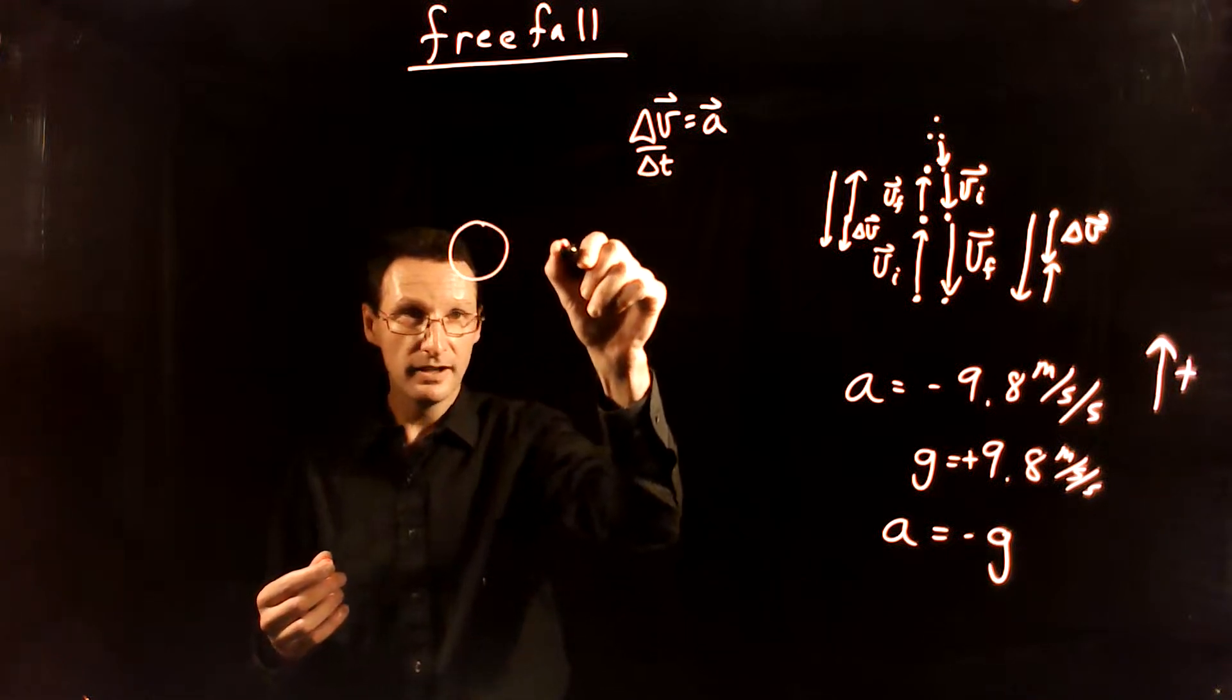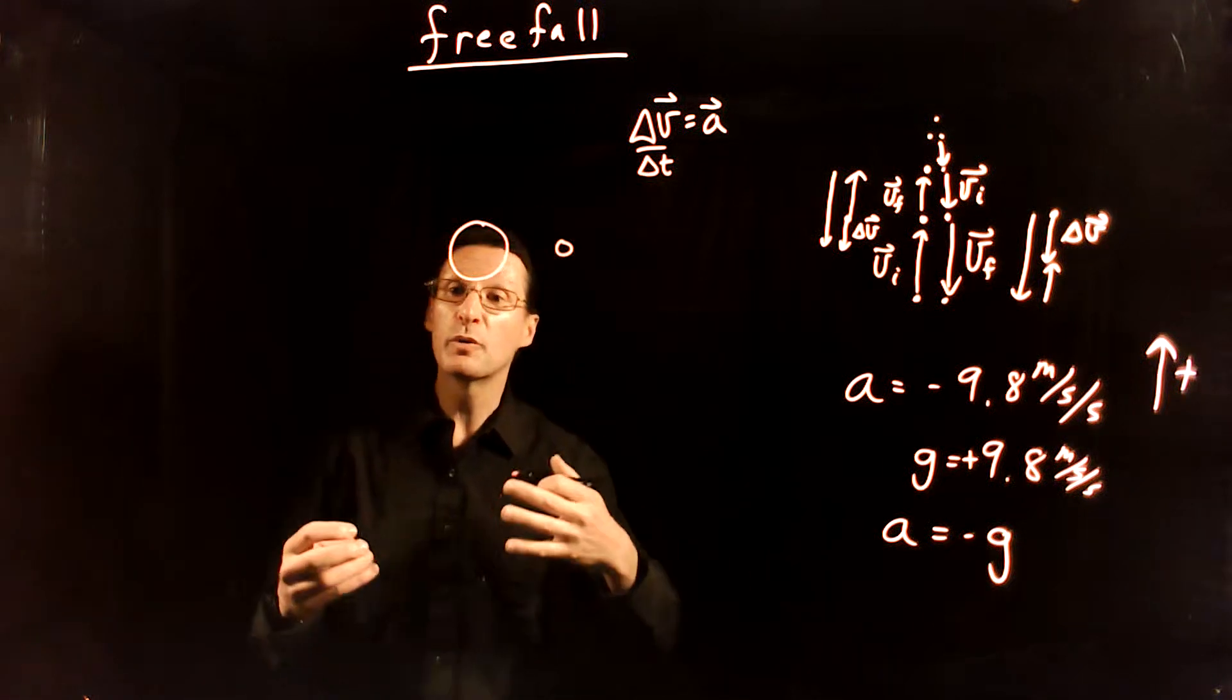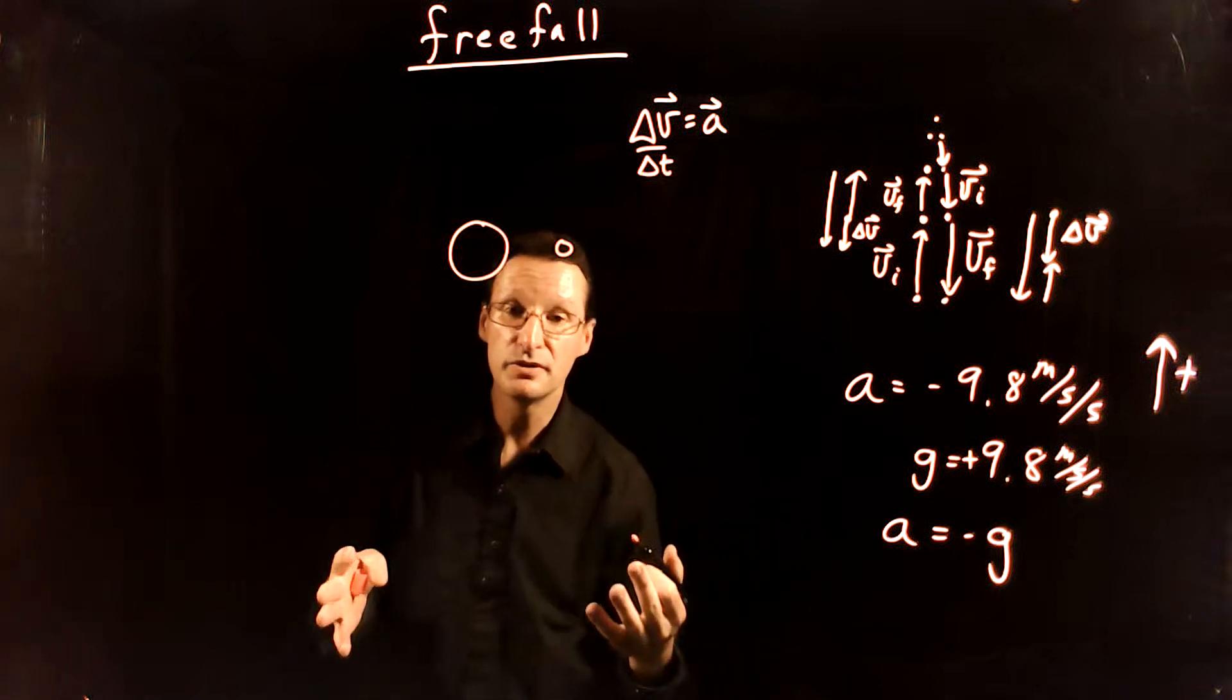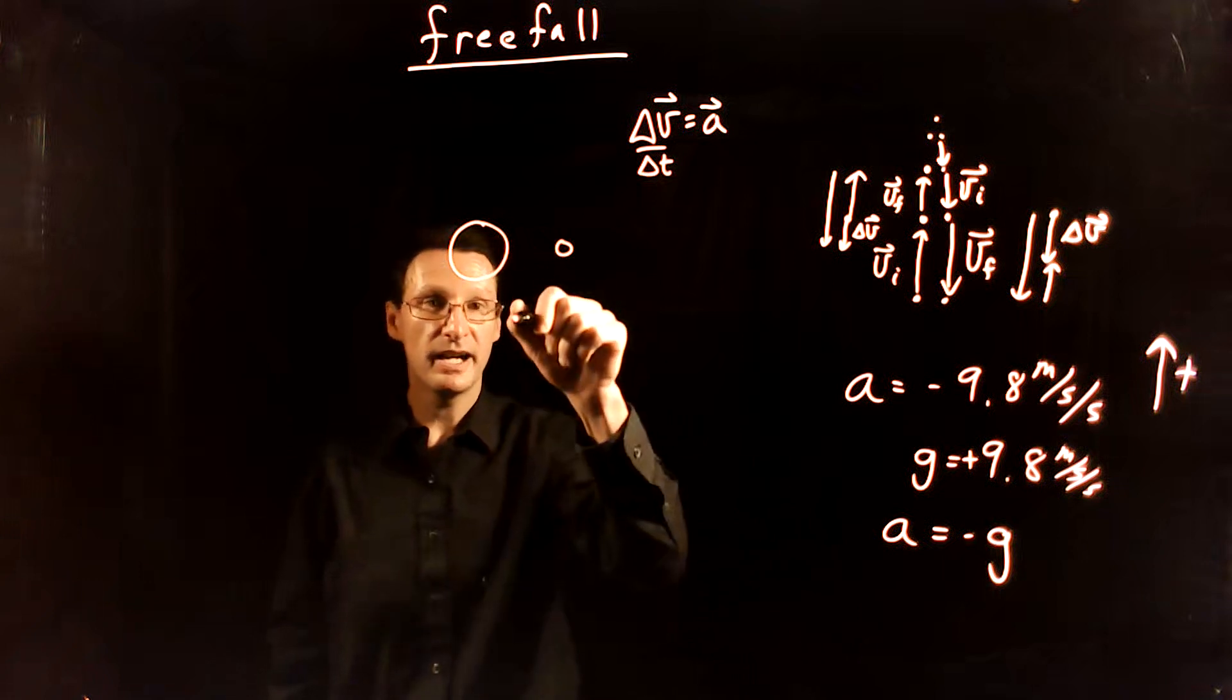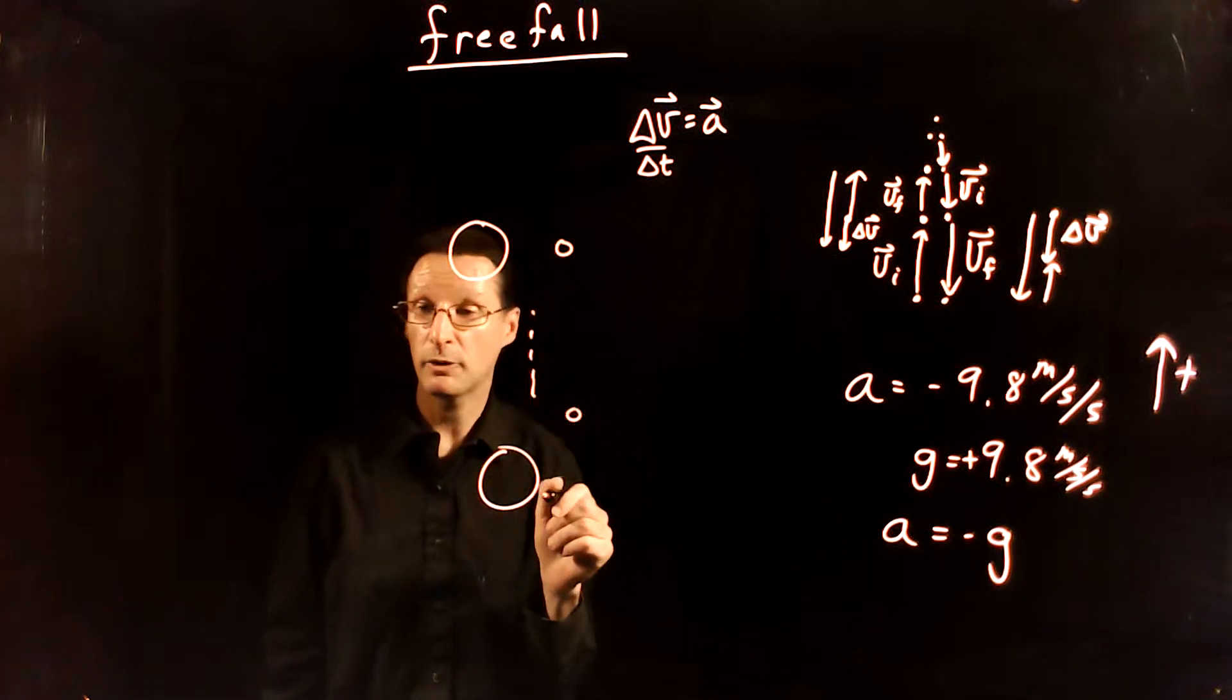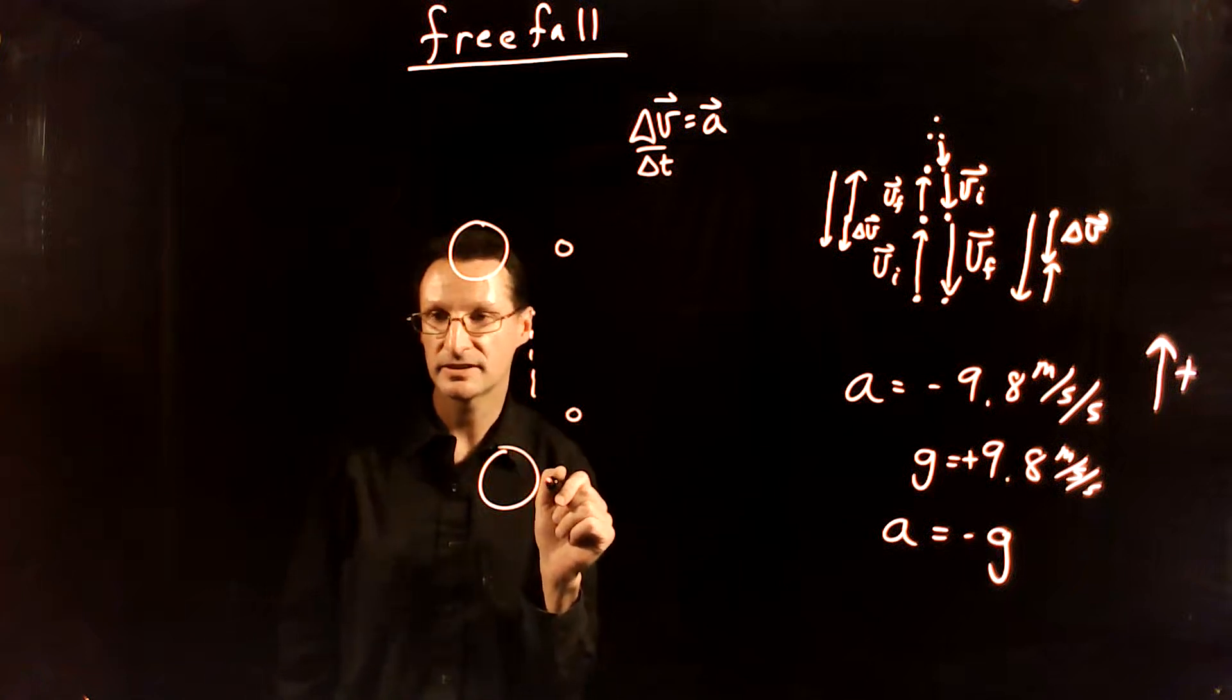Imagine that you have two objects, one's more massive than the other, and we're going to start with the initial assumption that more massive objects do fall with greater acceleration than less massive objects. So as these fall, the more massive object is going to outpace the less massive object. This is going to fall with greater acceleration.